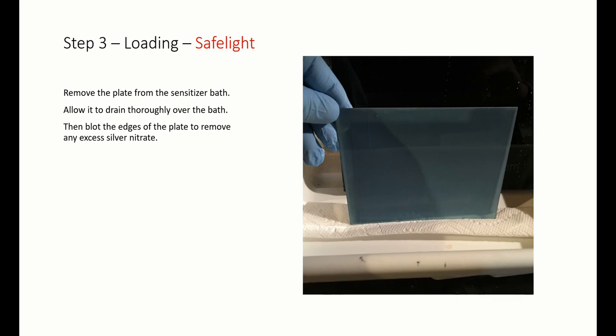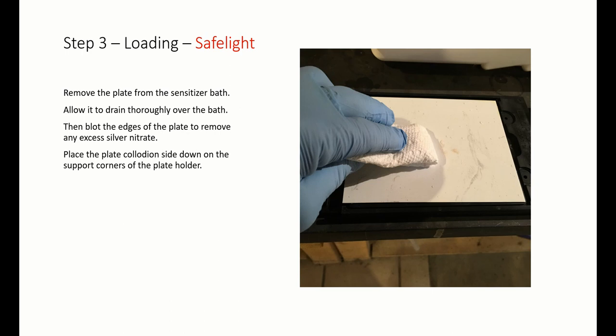Then blot the edges of the plate to remove any excess silver nitrate. Place the plate collodion side down on the support corners of the plate holder. Blot the back side of the plate to remove any excess silver nitrate.